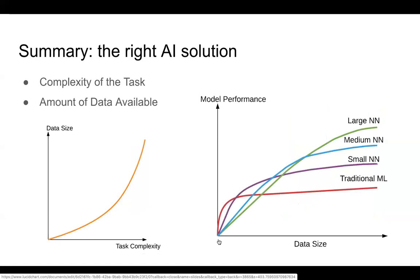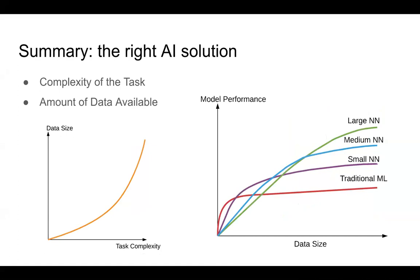To summarize, there are a lot of things to look at when choosing an AI solution, but two key things are the complexity of the task and the amount of data available to you. Those two factors give you a huge lever in terms of where you should go as you build a model, or if your model isn't working, what else you should look into.